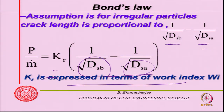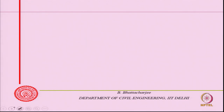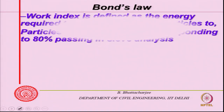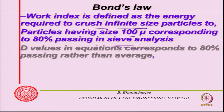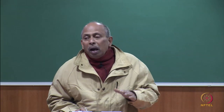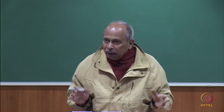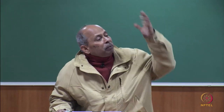This K has been expressed in terms of work index. Bond's coefficient - the work index - is defined as the energy required to crush an infinite size particle to a particle size of 100 microns, corresponding to 80 percent passing in sieve analysis. So if you want to crush to 100 microns, the total energy required - work index is the total energy required to crush from infinite size to that very fine size.